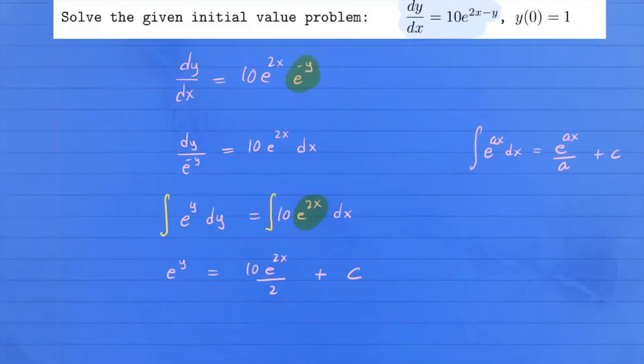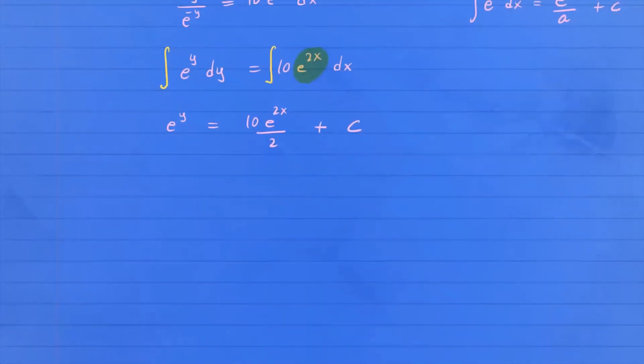Now let's solve for c. You could solve for the implicit solution by isolating y, or you can use the initial condition to solve for c and have your final answer right away. I'm going to apply this initial condition to solve for c. This is the x value and this is the y value. Plug them in.